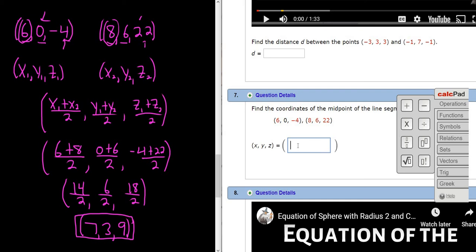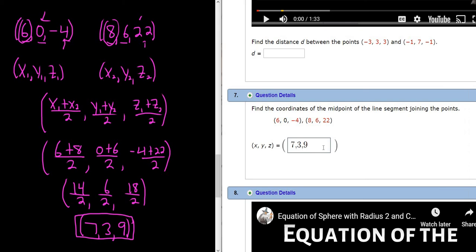So you would just type it in: 7, 3, 9. Notice the parentheses are already there for you. I hope this video has been helpful.